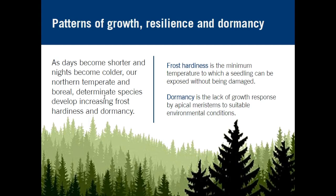Frost hardiness is the minimum temperature at which seedlings can be exposed to cool temperatures without being damaged. Dormancy is a lack of growth response, generally in the apical meristems — the shoots stop growing when conditions are unfavorable.